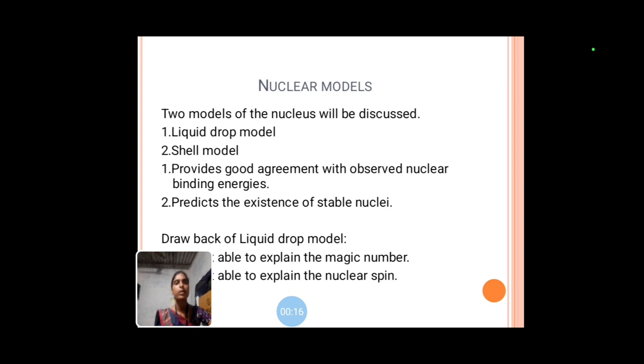Next, shell model. Shell model predicts the existence of stable nuclei. It is known that a nucleus is stable if it has a certain definite number of either protons or neutrons. These numbers are magic numbers. The magic numbers are 2, 8, 20, 50, 82, and 126.